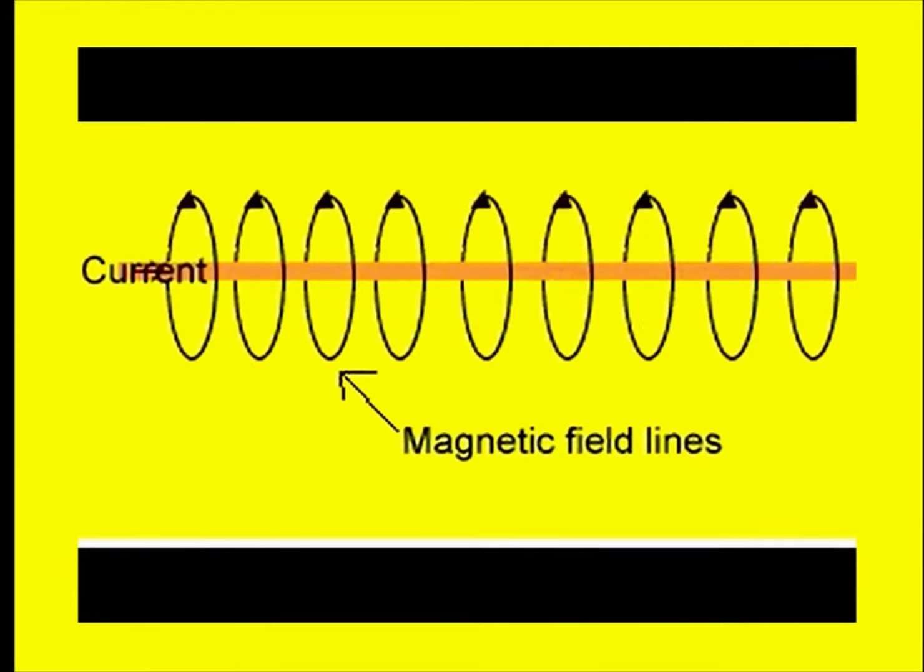And any wire in which electric current is flowing is surrounded by an invisible force field called magnetic field shown by the circular arrows. So, basically electromagnetism is production of magnetic field by a current flowing in a conductor.